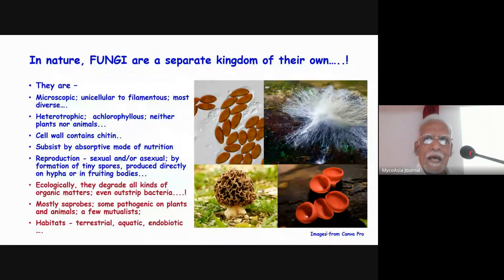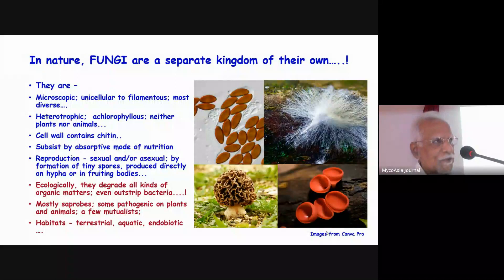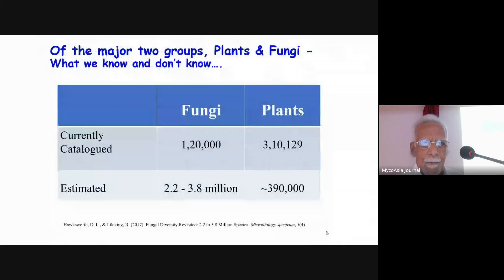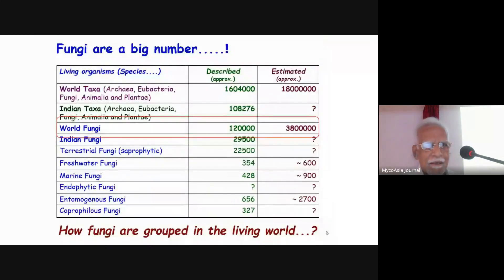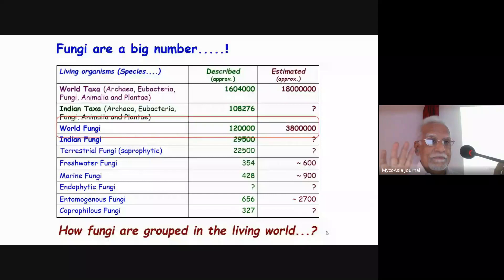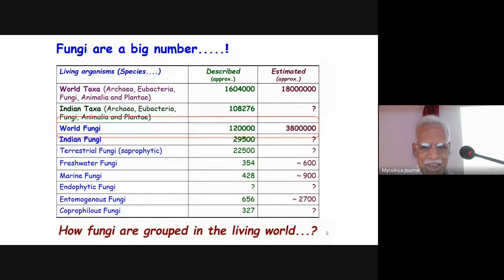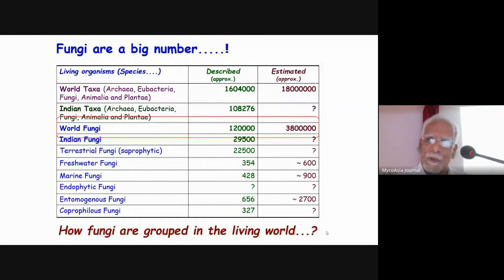Ecologically, fungi even outstrip bacteria in their ability to degrade organic material. You will see them everywhere — aquatic, endoparasitic, and so on. Comparing plants and fungi, in the plant kingdom we know quite a lot, whereas for fungi we know only 5–7% of them. Within the fungal kingdom there is a big number, and the numbers keep changing as we describe newer fungi.